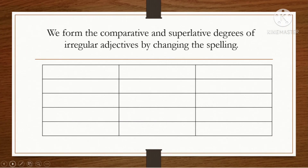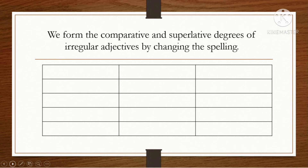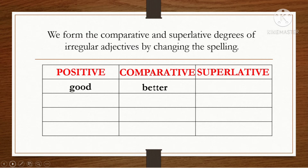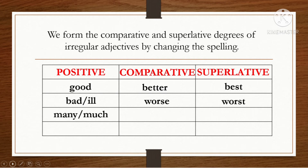We form the comparative and superlative degrees of irregular adjectives by changing the spelling. Let's study this chart. Positive, comparative, superlative: good, better, best; bad or ill, worse, worst; many or much, more, most; far, farther, farthest.